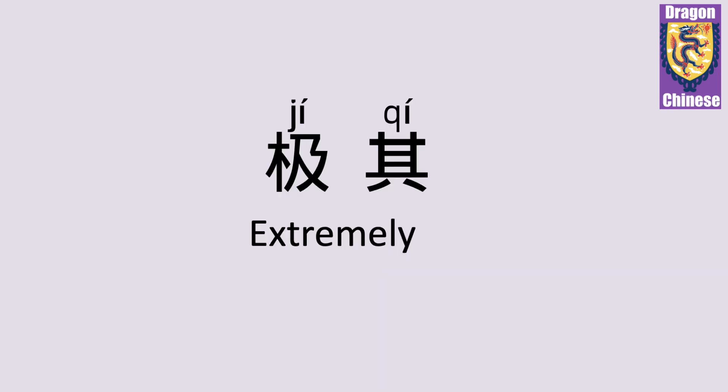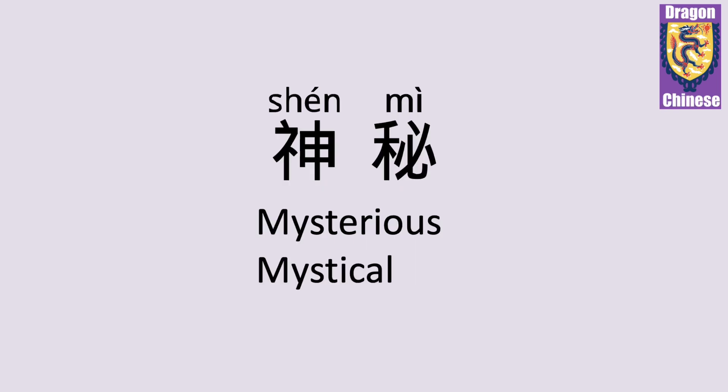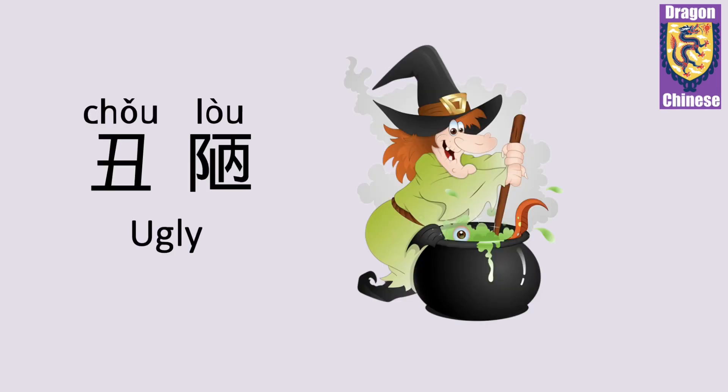神秘 — mysterious, mystical. 神秘. 醜陋 — ugly. 醜陋.